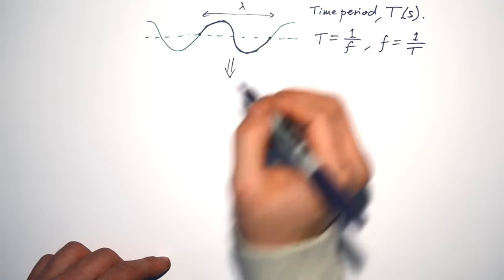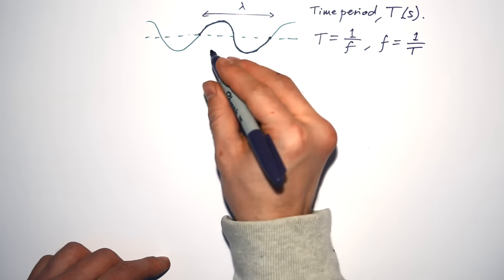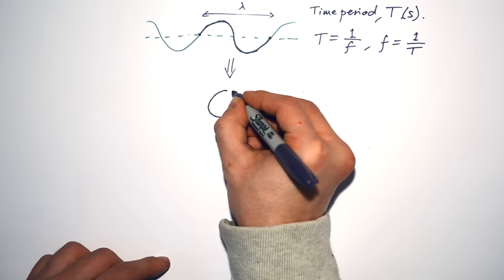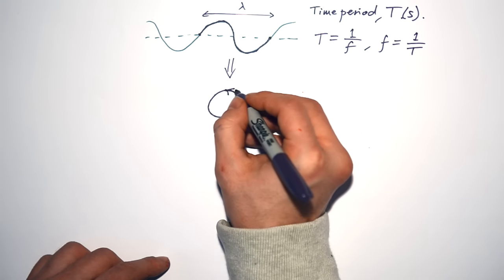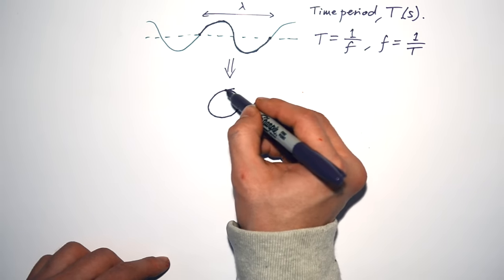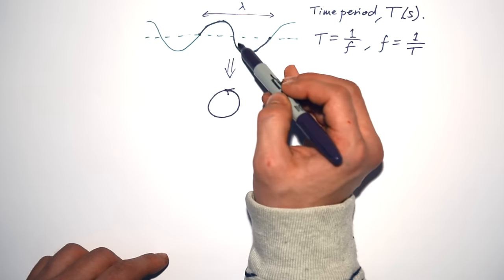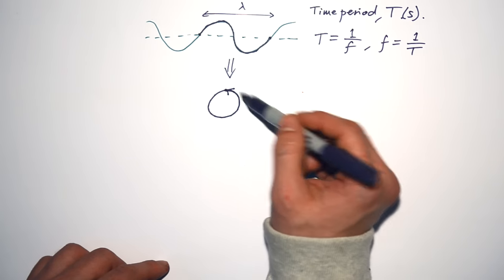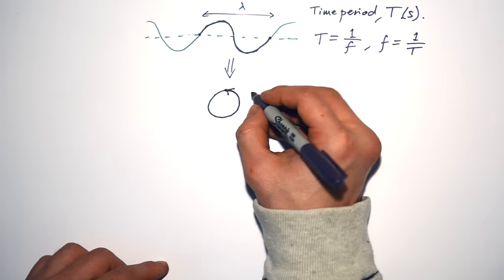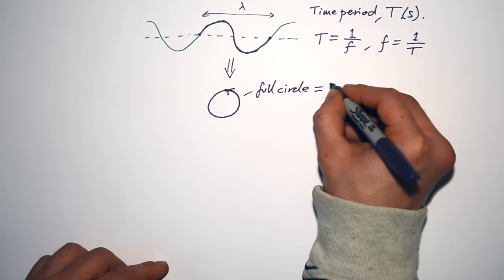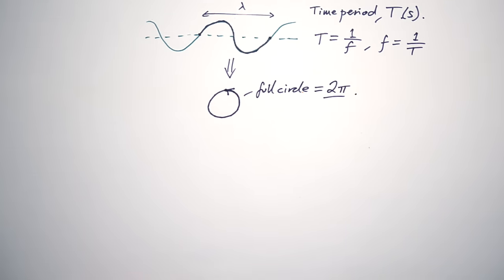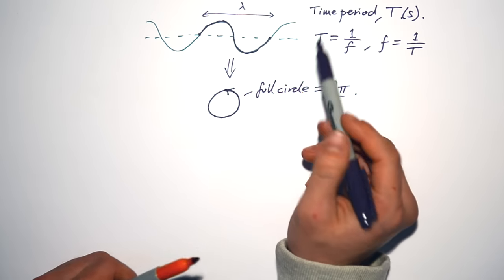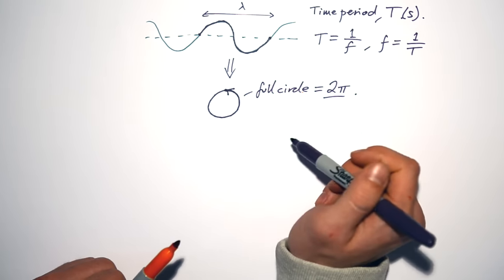We can also represent a complete wave not with a traditional wave diagram but with a circle. The start at the top goes all the way around. Here we can also talk about time periods, but we're talking about a circle. A full circle is 2π radians, and the same goes for our waves — a full wave is 2π radians.